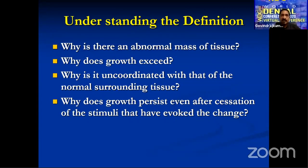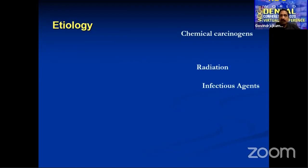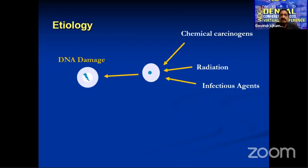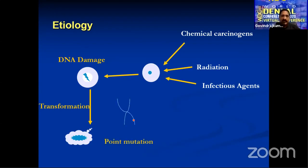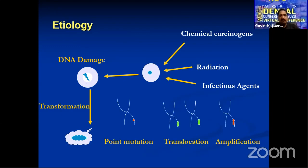We'll see one by one the reasons for each question. Coming to the etiology for any cancer, we have chemical carcinogens, radiation, and infection agents. They all act on the cell, and most times the DNA gets damaged — it gets mutated. Once the DNA gets mutated, there is a transformation. The mutation can be in the form of point mutation, translocation, amplification, frame shift, and more. When these agents act on a cell, there is DNA damage or mutation that leads to tumor formation.